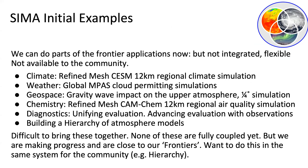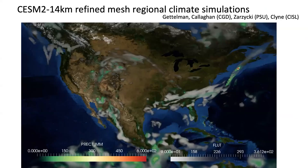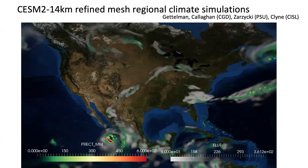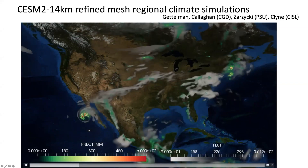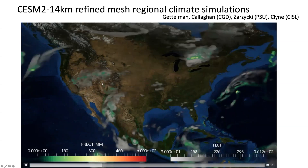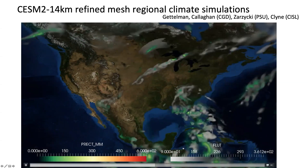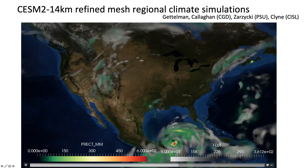Now I'm going to show some initial examples of these frontier applications. We can do parts of these things now, but these are one-off experiments — they're not integrated, not flexible, and not available to the community. This is a 14-kilometer refined mesh regional climate system over the United States. The gray colors are the outgoing longwave radiation and high clouds, and the green colors are precipitation colored like a precipitation radar. These are snapshots every few hours for spring season and you can see tropical cyclones — one in the Pacific — and mesoscale systems moving across in spring, synoptic systems, and mesoscale systems embedded in synoptic systems. There's also a tropical cyclone that comes in and hits the Gulf Coast of North America.